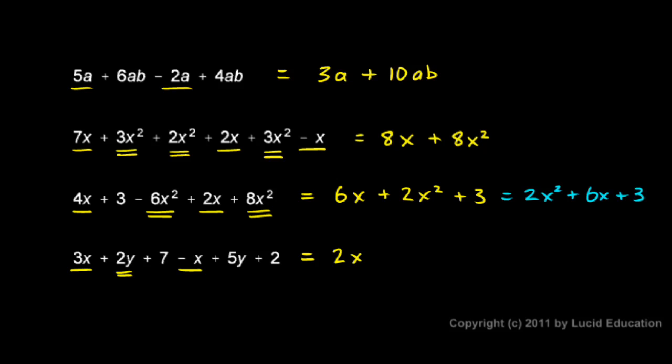And then here's a 2y and a 5y. Those combine to give me a 7y. And then I have the 7 and the 2. Those combine to give me a 9. So that's my answer. 2x plus 7y plus 9.